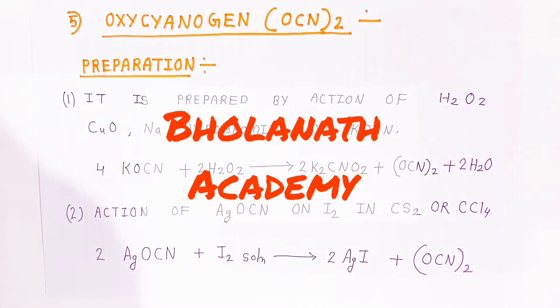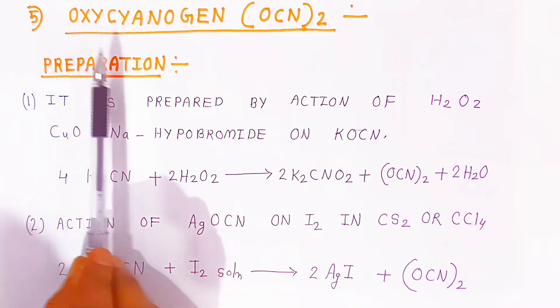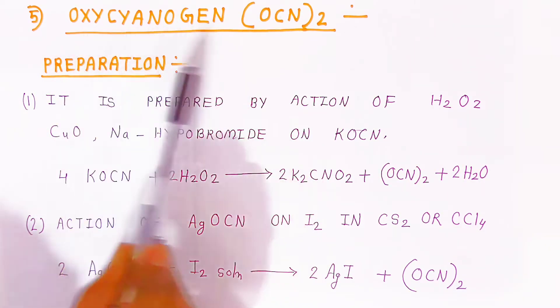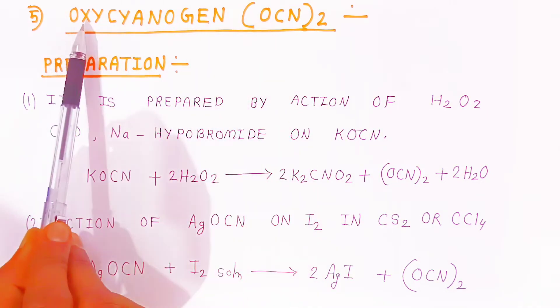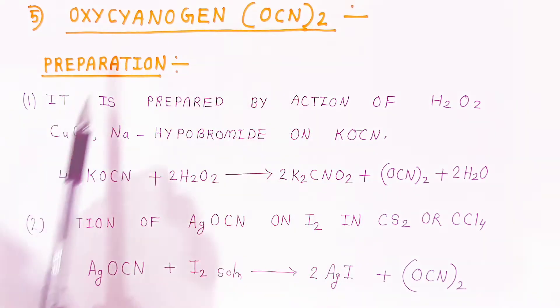Hello students, once again welcome to Bholanath Academy. In this video, we are going to see the fifth example of pseudohalogen, which is called oxycyanogen. This is oxy because of the oxygen, and CN is cyanogen, so it is called oxycyanogen.